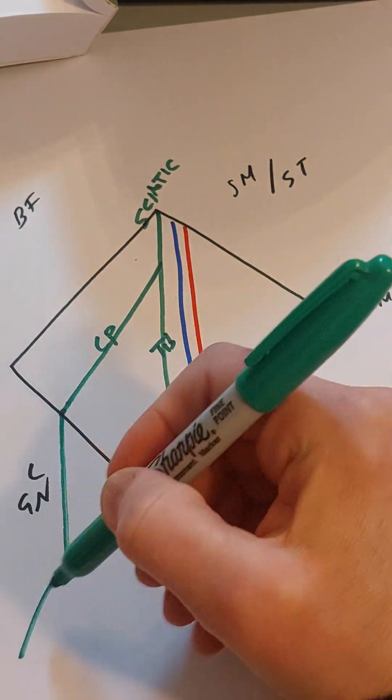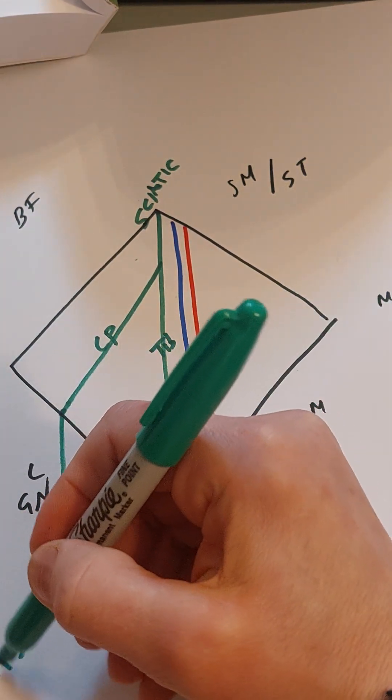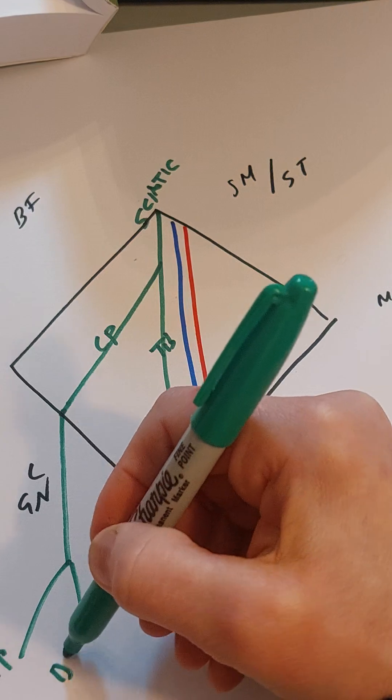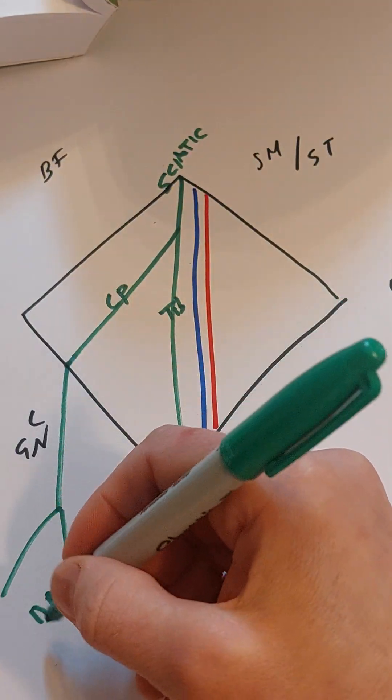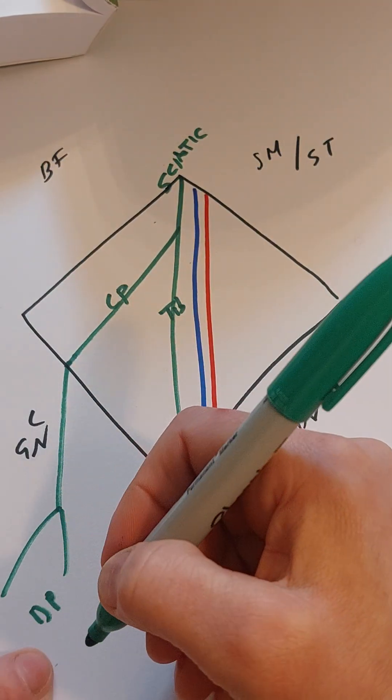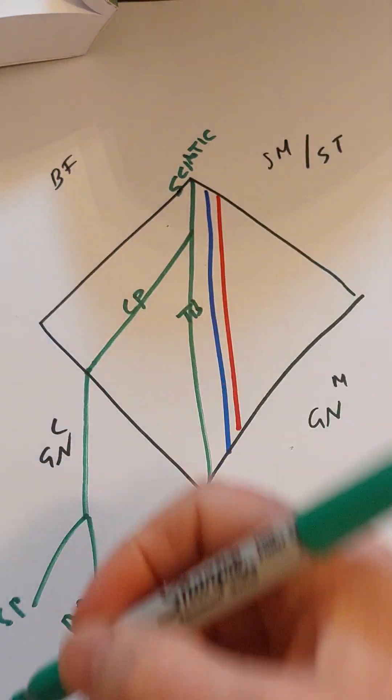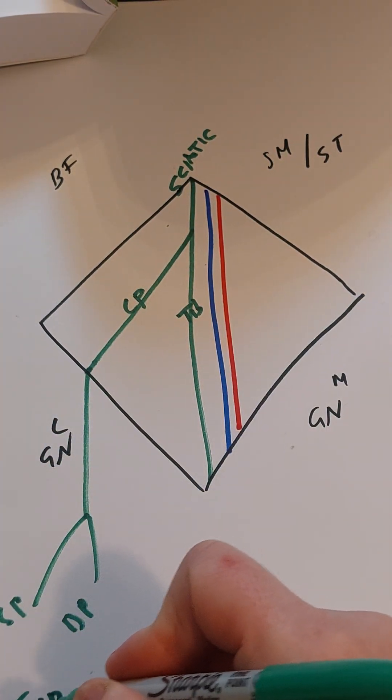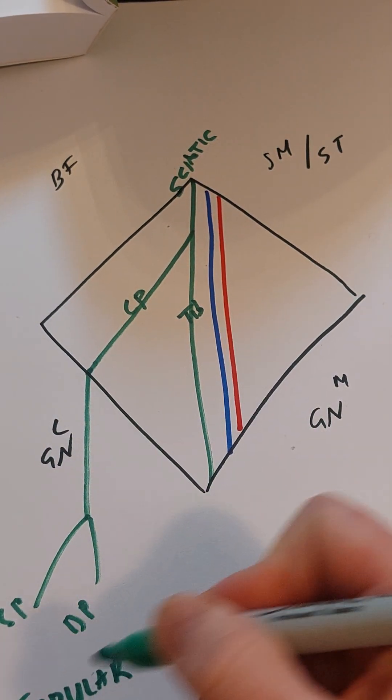The common peroneal becomes a superficial peroneal and the deep peroneal. They're also known as the superficial fibular and the deep fibular and the common fibular. So the more modern word for peroneal is fibular. When I learned them it was peroneal.